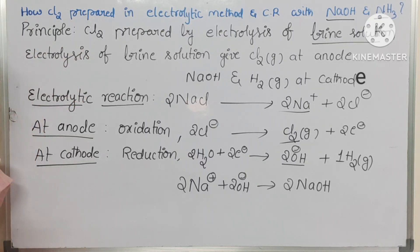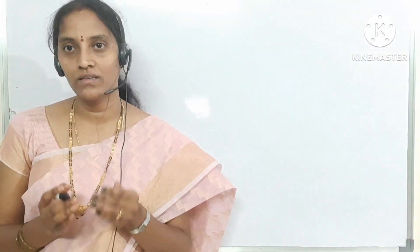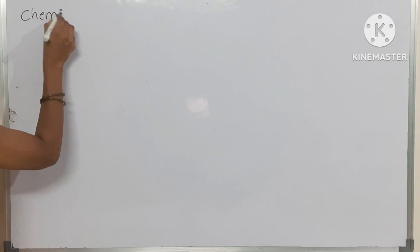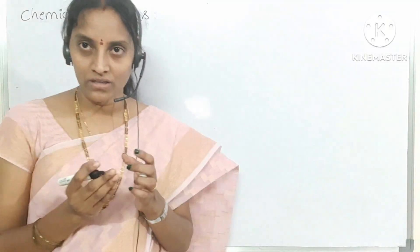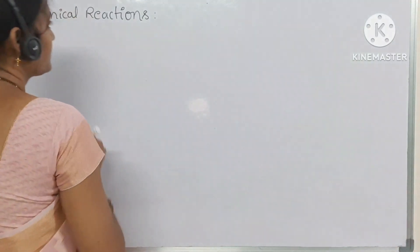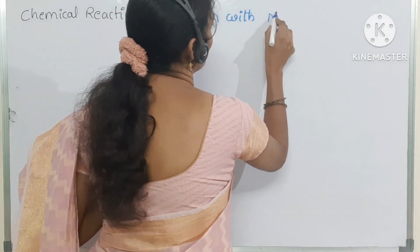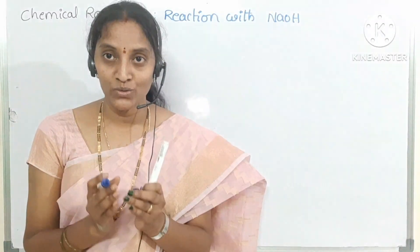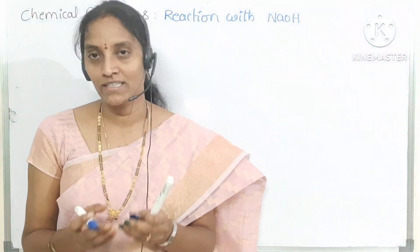Now we will go to chemical reactions of chlorine gas with NaOH and ammonia in different conditions. Reaction with NaOH happens in 2 conditions: first, cold and diluted NaOH reacts with chlorine gas; second, hot and concentrated NaOH reacts with chlorine gas.